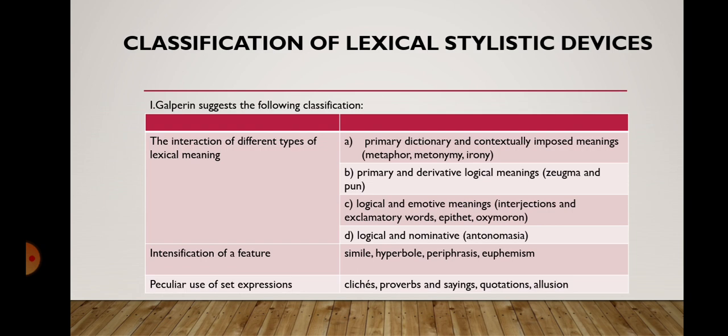A well-known Soviet linguist Galperin suggests the following classification of lexical stylistic devices. He points out three criteria. The first is the interaction of different types of lexical meaning, within which he highlights the interaction of primary dictionary and contextually imposed meanings. Here he suggests metaphor, metonymy, and irony.